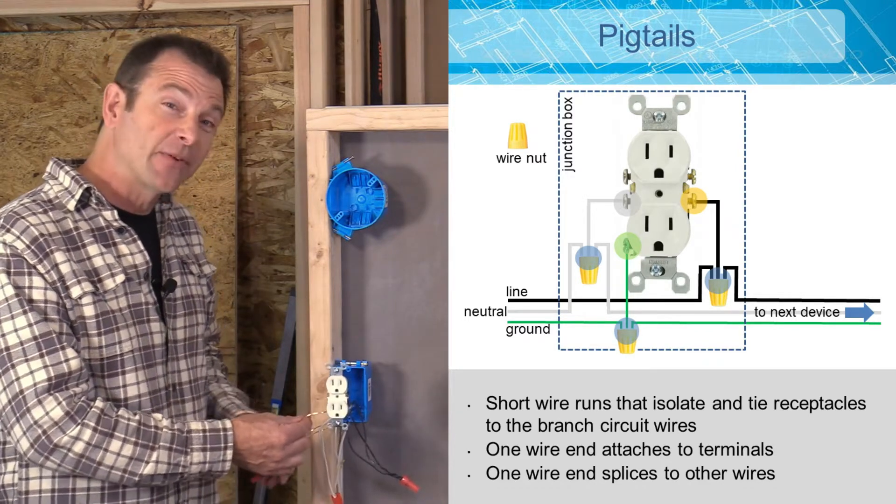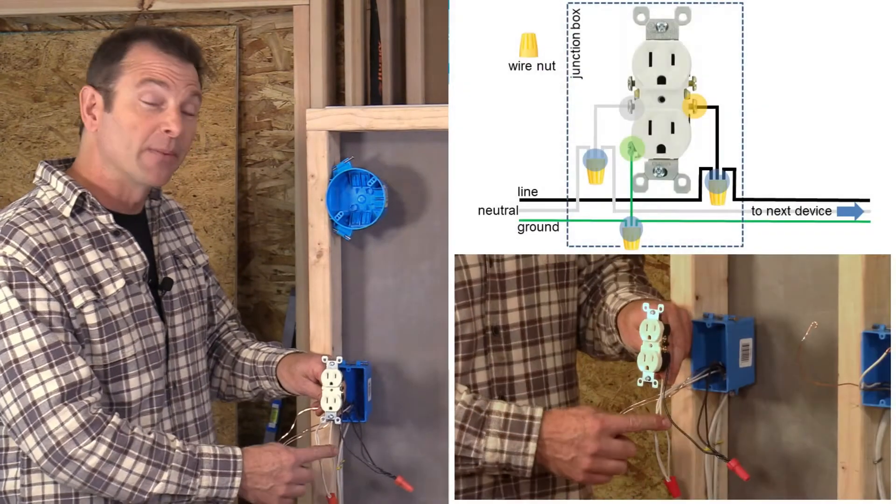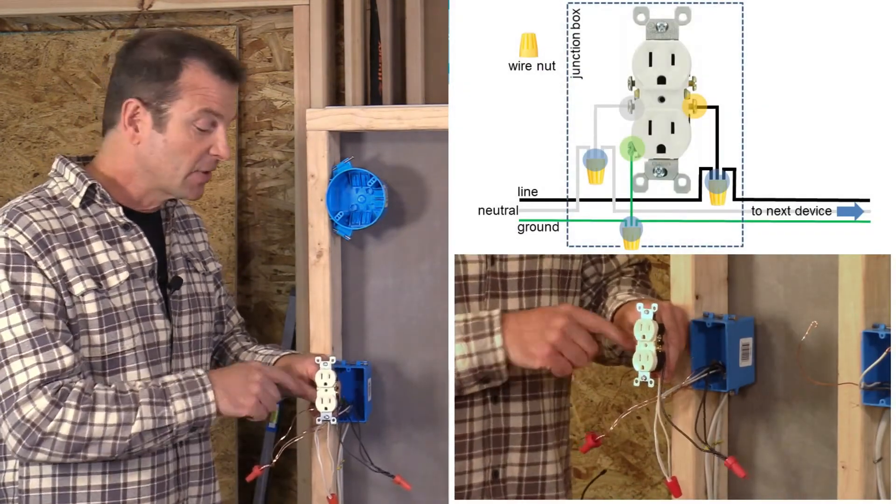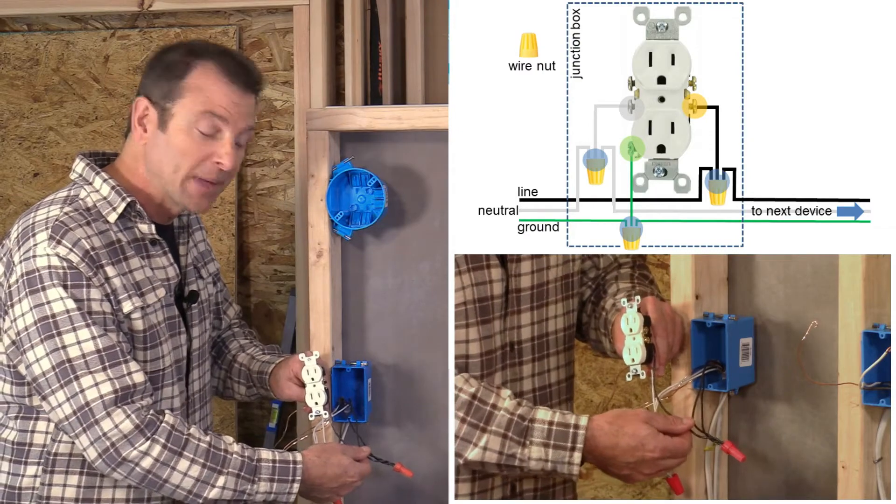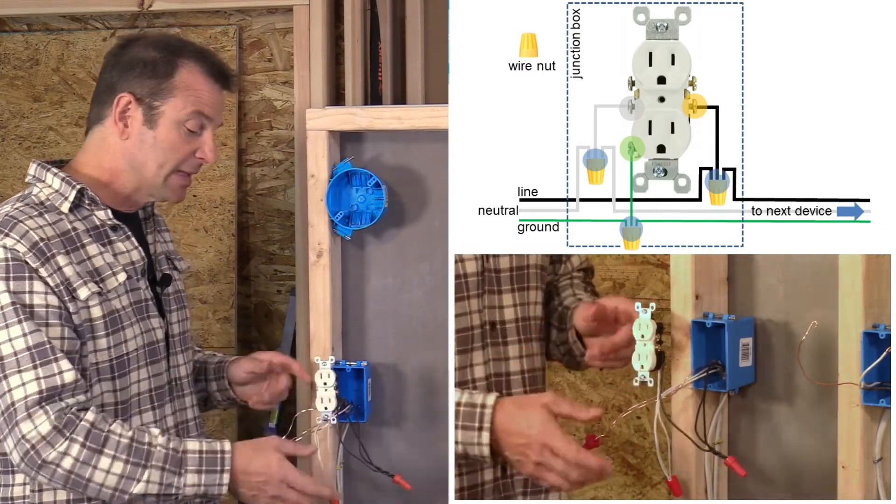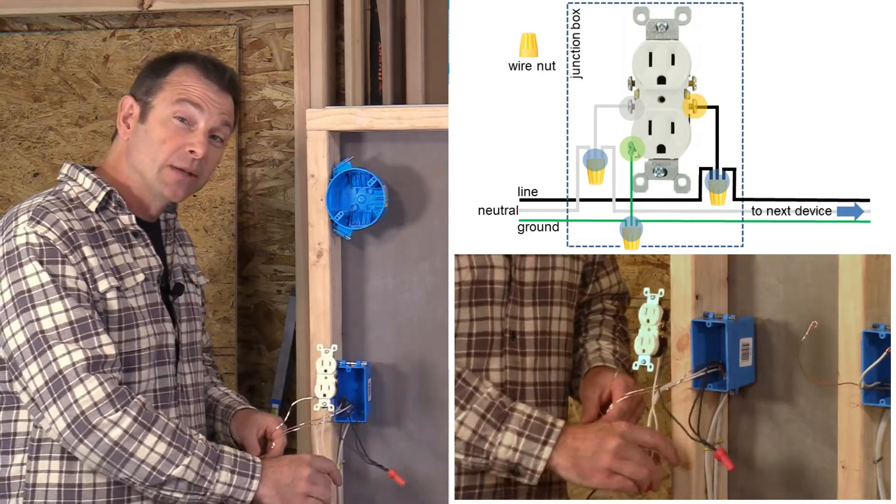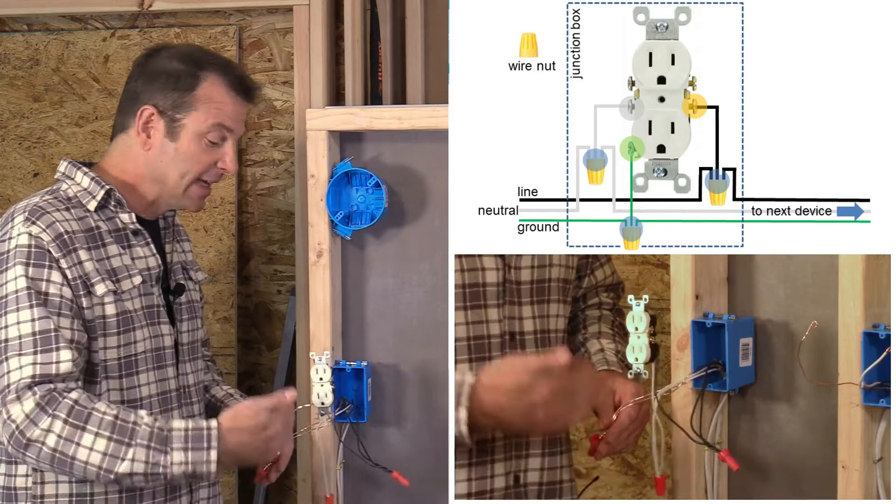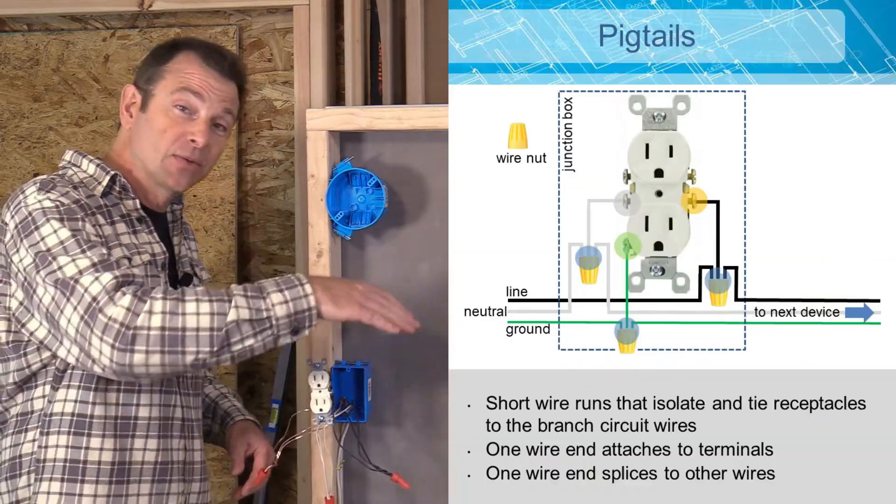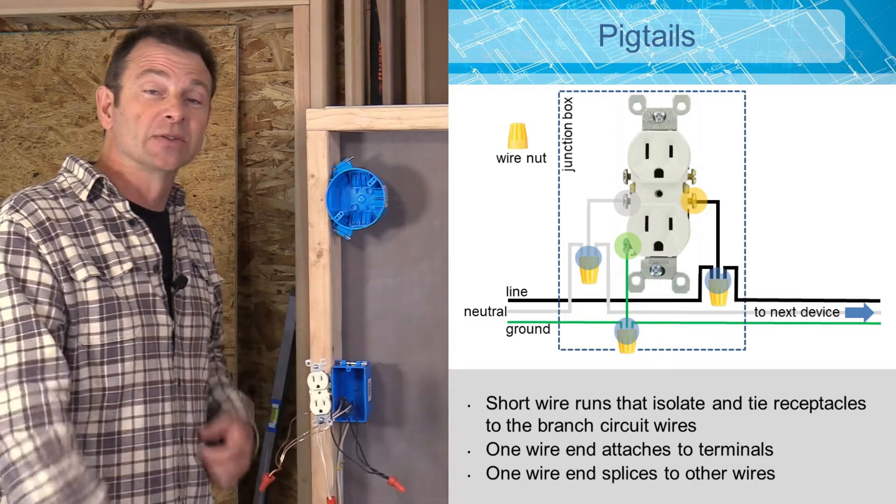Those are all getting connected to a short wire we're calling a pigtail. I've got a pigtail for my ground that's going to a ground terminal. I've got this short pigtail for my neutral going to the silver terminal. And I have a short pigtail for my hot going to my gold terminal. So you see here we have three terminals that are connected to two other wires. And this allows us to continue through this circuit and isolate this outlet from all of those connections.